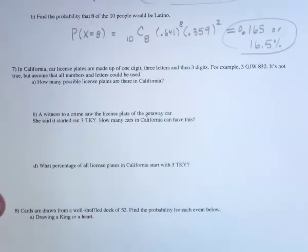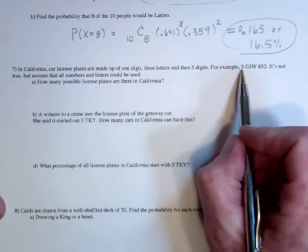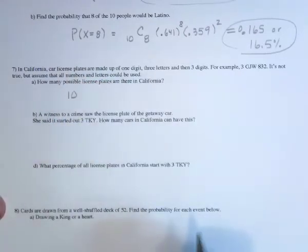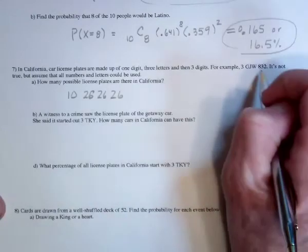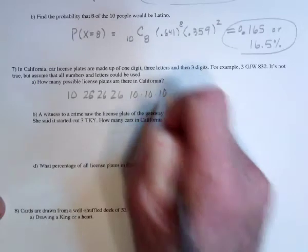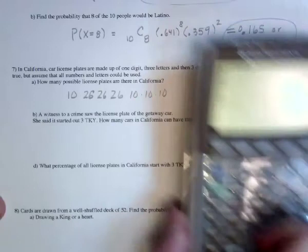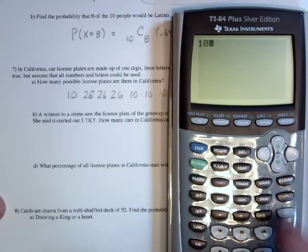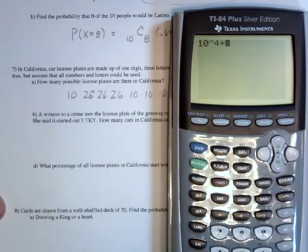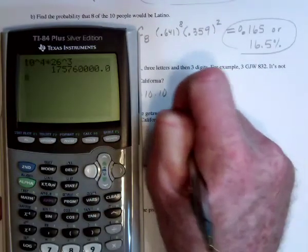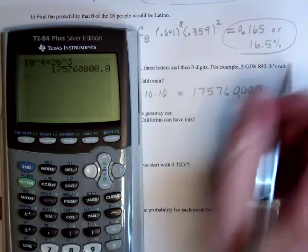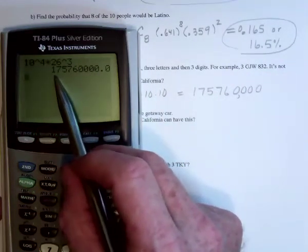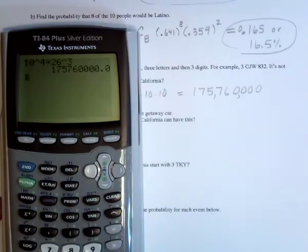Now on to another counting problem. With a license plate, it starts with a digit and there's 10 of those, then there's 3 letters in a row—26, 26, and 26 letters in the alphabet—and then 3 digits in a row, so 10, 10, 10. Then multiply all of this up, so we've got 10 used four times and 26 used three times. Wow, that's pretty big. That's 175,760,000—175 million different license plates.